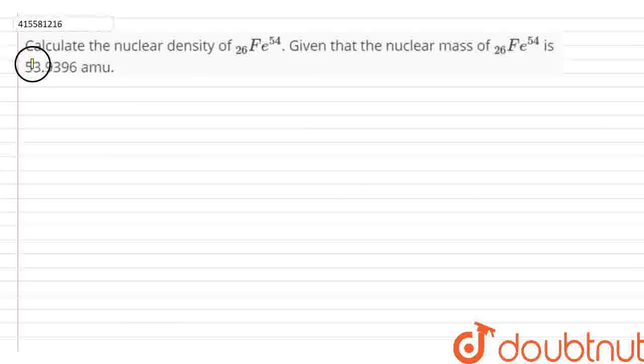Our question is to calculate the nuclear density of Iron-54, given that the nuclear mass of Iron-54